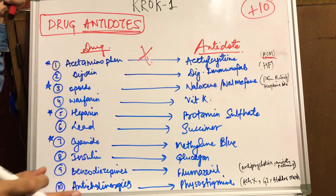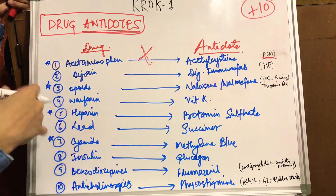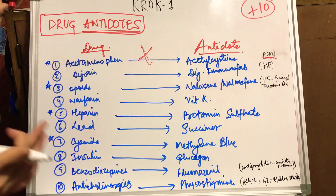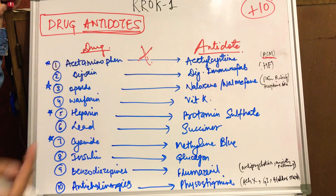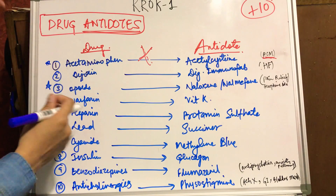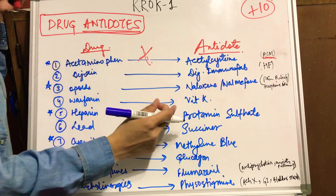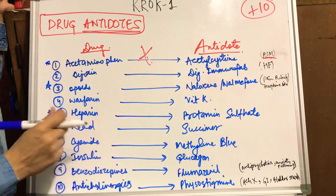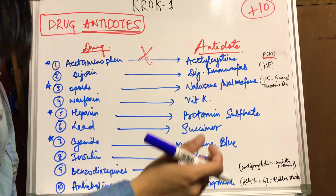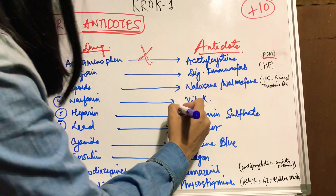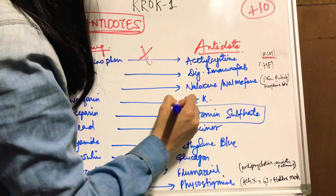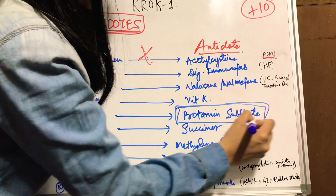The fourth and fifth drugs are warfarin and heparin — these are anticoagulants. The antidote for warfarin is vitamin K, and the antidote for heparin is protamine sulfate. This is very, very important — you need to remember this for the rest of your lives.